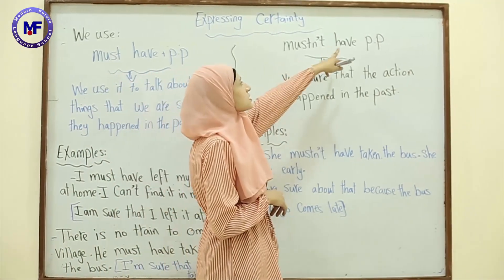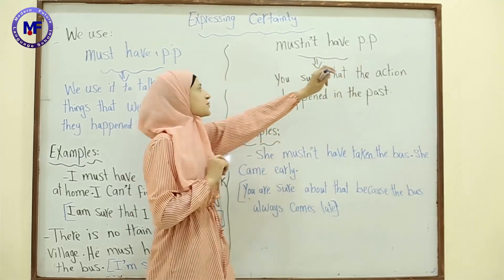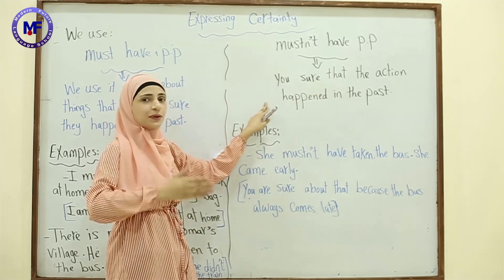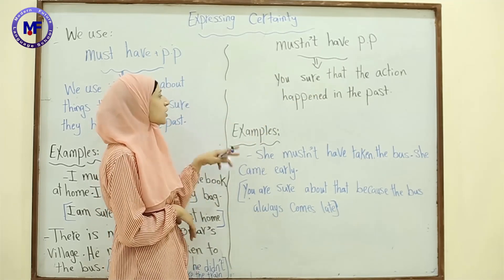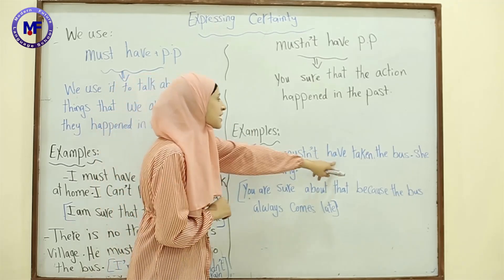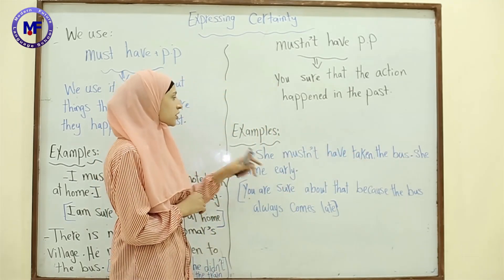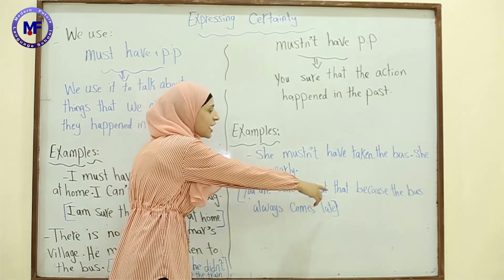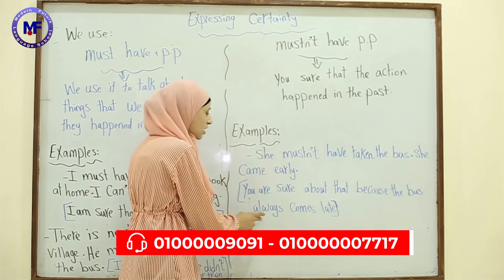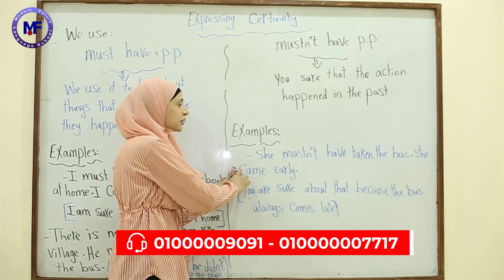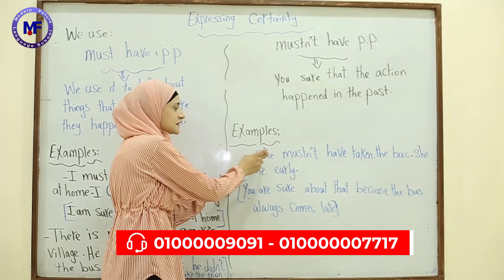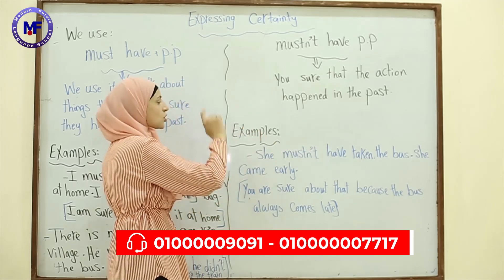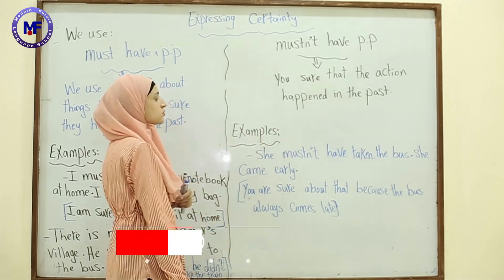In the negative, we use 'mustn't have' and the past participle. For example: 'She mustn't have taken the bus — she came early.' You are sure about that because the bus always comes late and she came early, so you are sure she didn't take the bus.